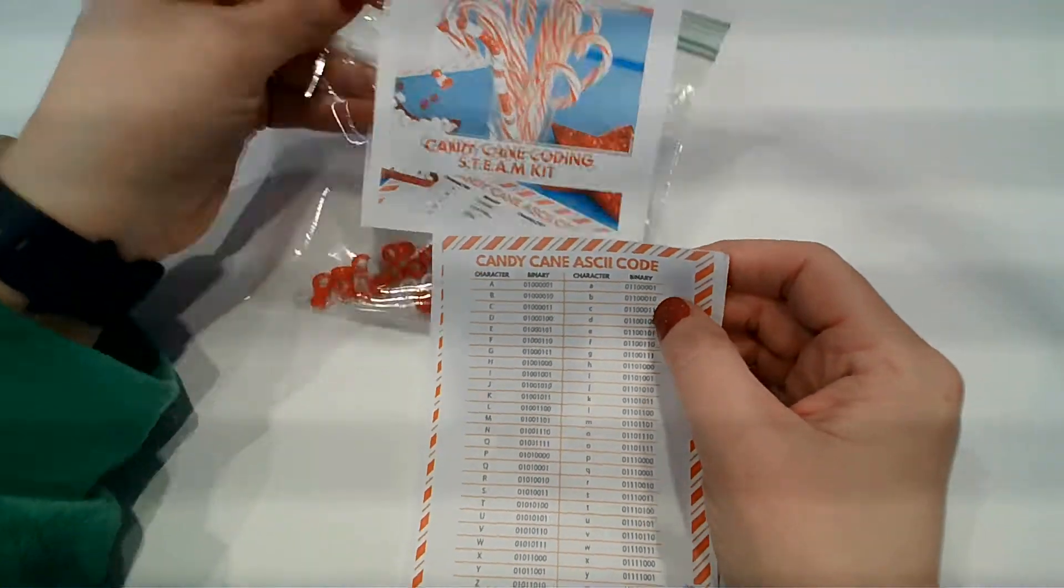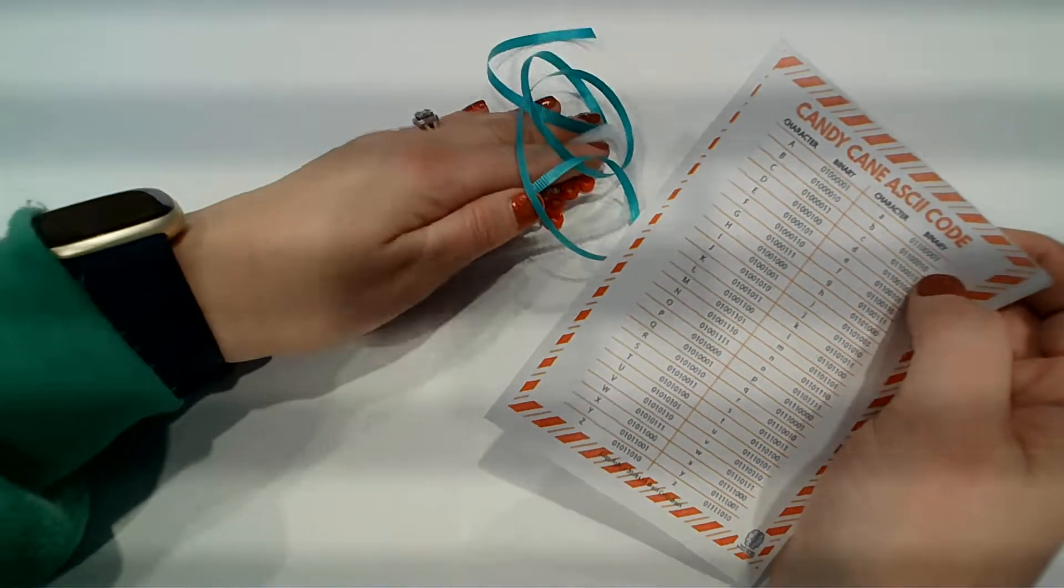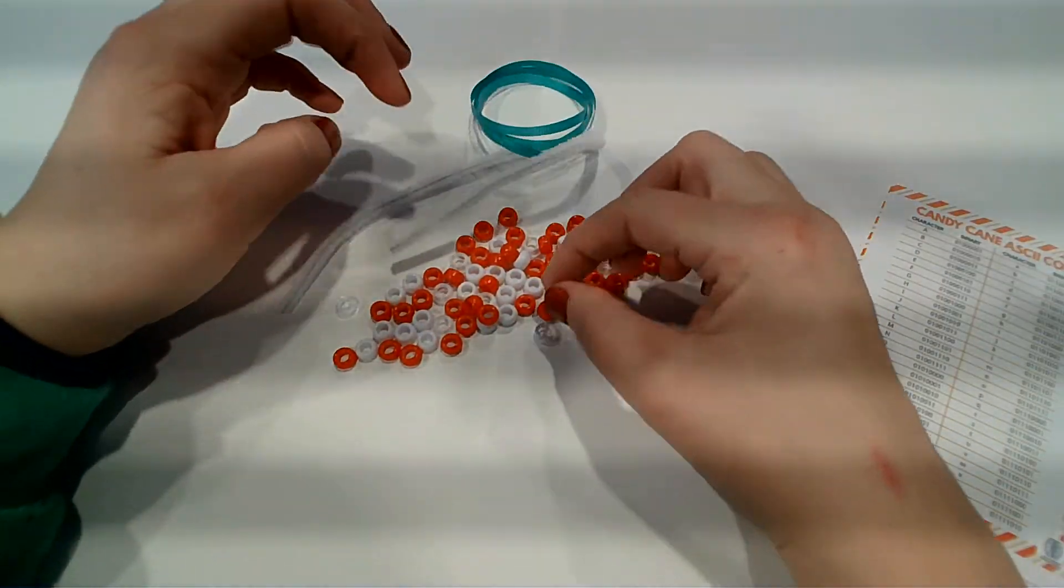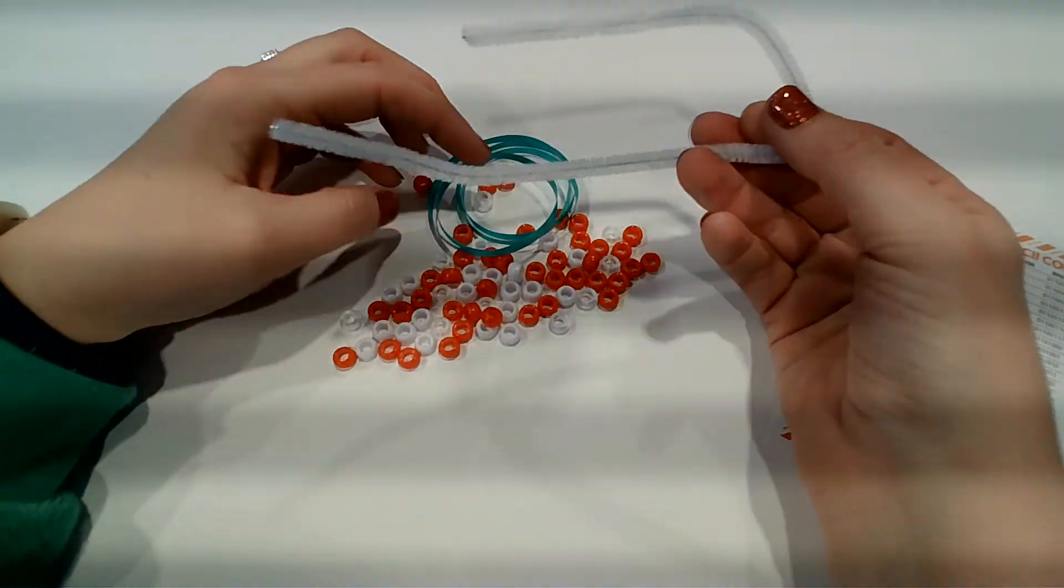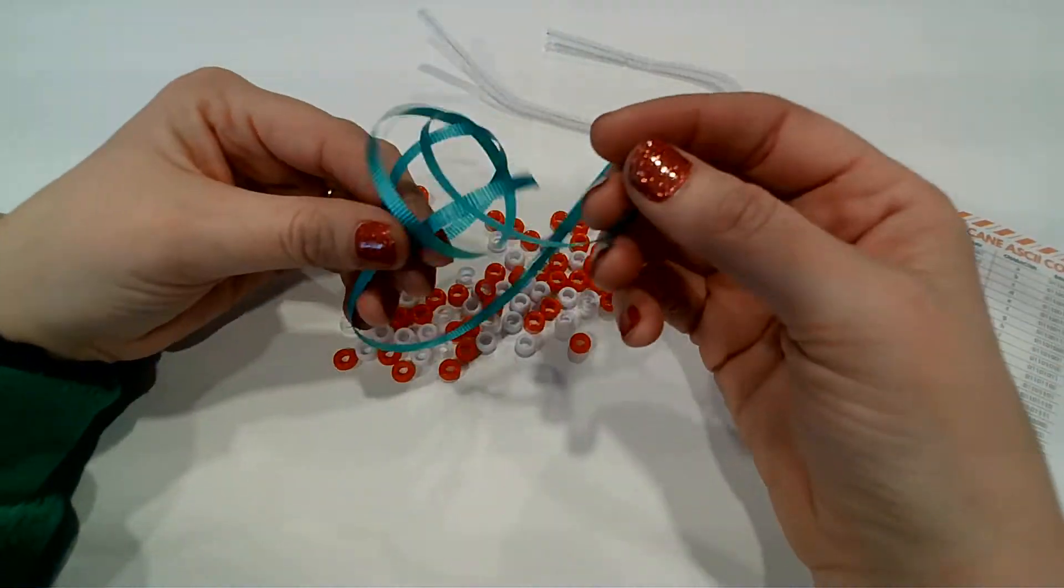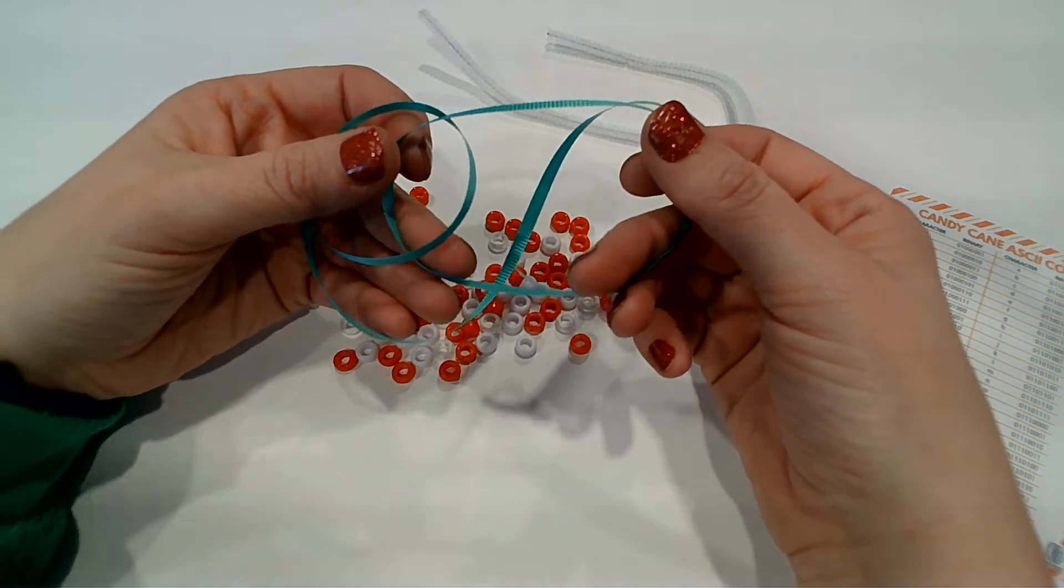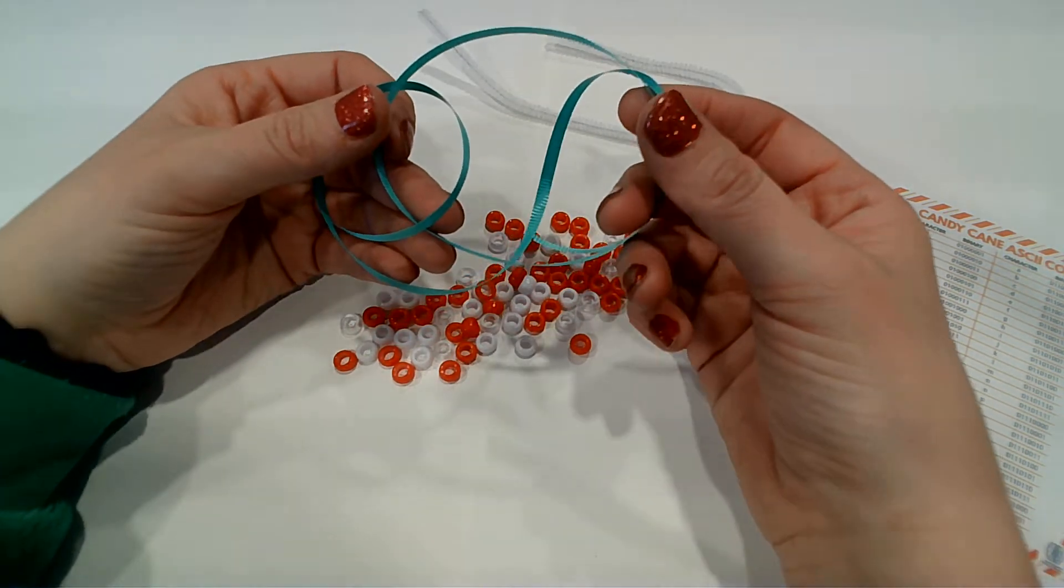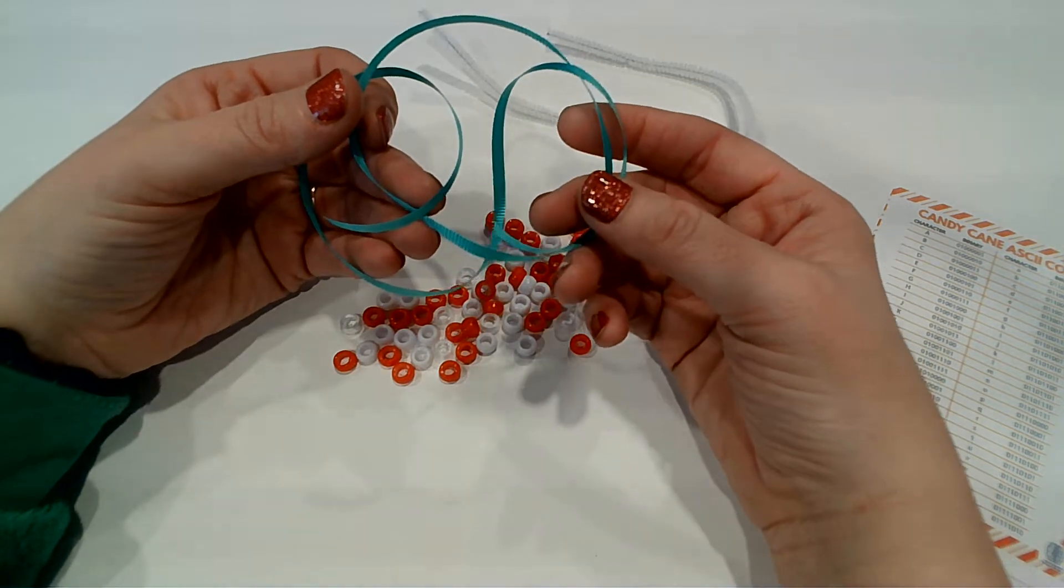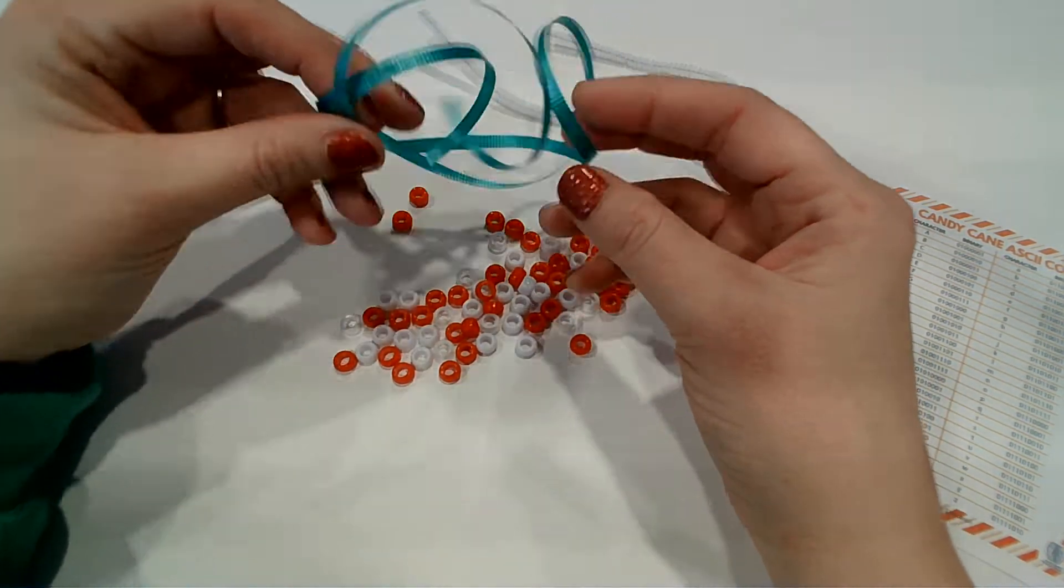So in your kit, you are going to find that you have some red beads, some white beads, some clear beads, a white pipe cleaner, and then some green ribbon. And the ribbon is just in case you wanted to make this an ornament. Maybe you wanted to hang it on the City of Williston's Christmas tree for the Christmas ornament contest, which you have until Sunday to do that.